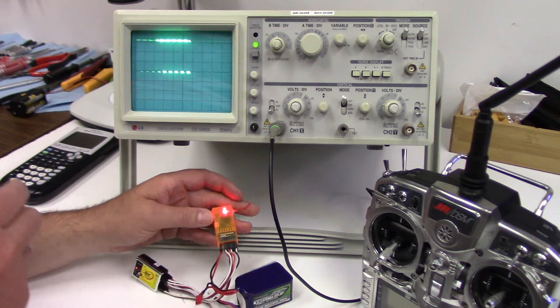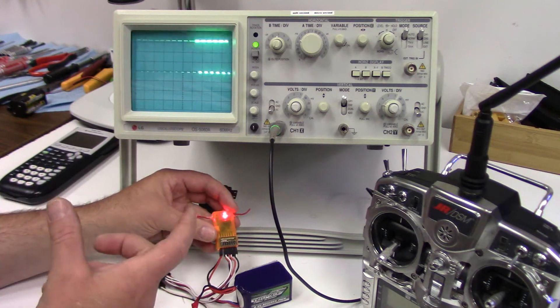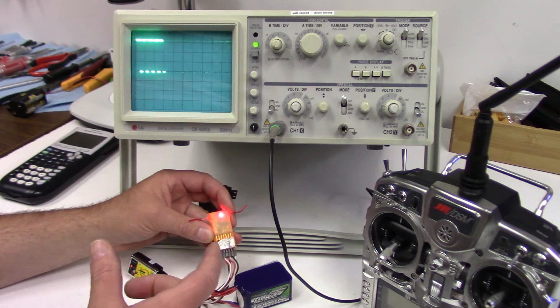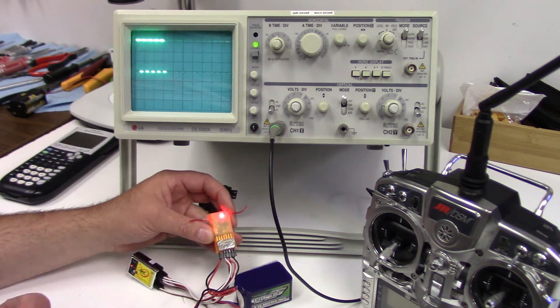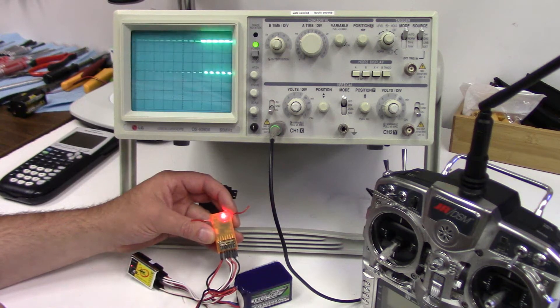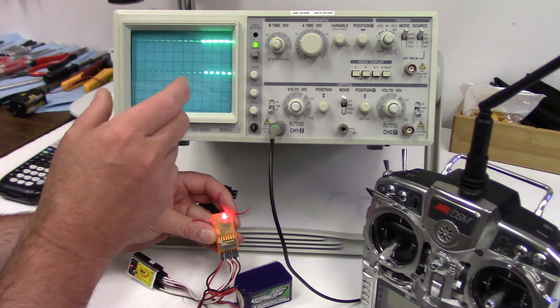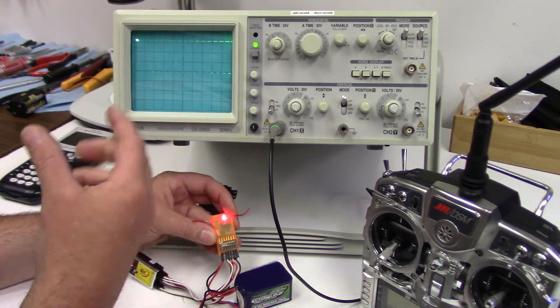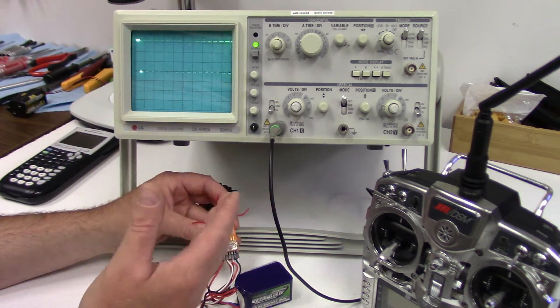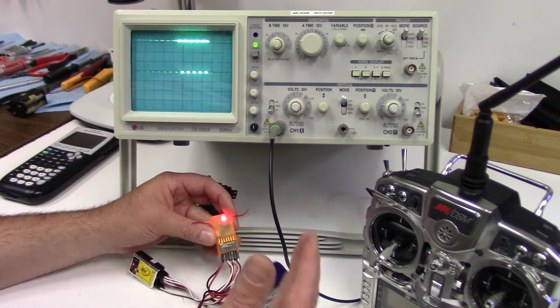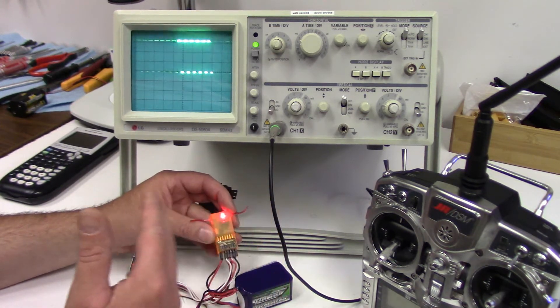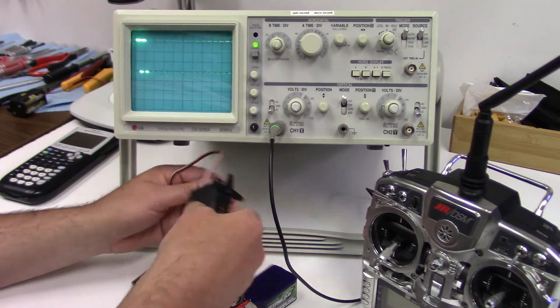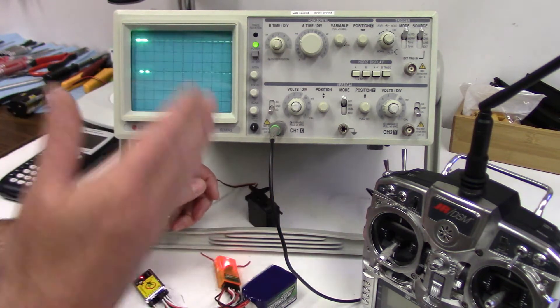We talked about that it refreshes, that the signal refreshes every 20 milliseconds. That's the refresh rate which works out to a 50 Hertz PWM signal and we showed how the PWM, the width of the PWM pulse, pulse width modulation, how changing the width between 1,000 microseconds and 2,000 microseconds dictated where the servo would rotate to, with roughly 1,500 microseconds being your centering position.